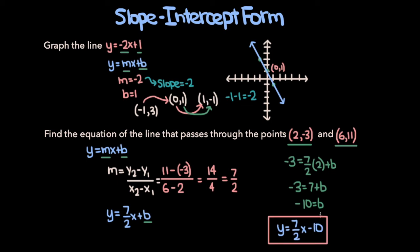For these types of problems, you can verify your equation using the other point. We know when x is 6, y must be 11. Plugging in: y equals 7/2 times 6 minus 10. That's 42 over 2 minus 10, which is 21 minus 10 equals 11. Since we get y equals 11, we know we have the right equation.